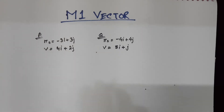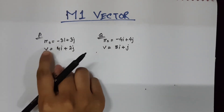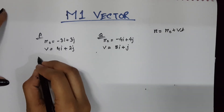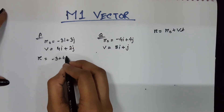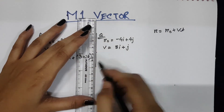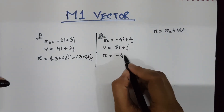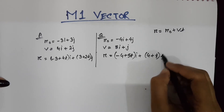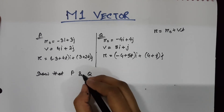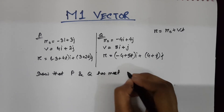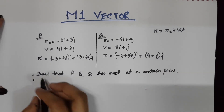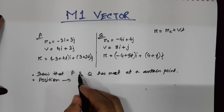Now suppose we have two particles, P and Q. Using the formula R = R0 + Vt, we can find the final position of P after t seconds as (−3 + 4t)i + (3 + 2t)j. Similarly, the final position of Q after t seconds is (−4 + 5t)i + (4 + t)j. If we need to show that particle P and Q have met at a certain point, we need to find the intersecting position.